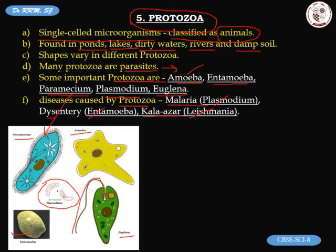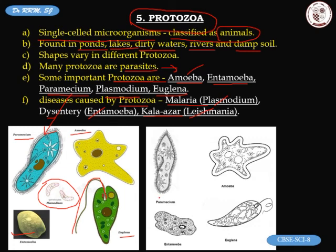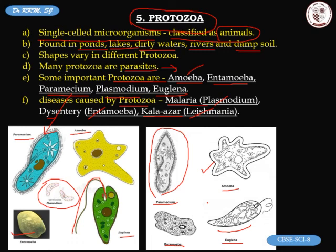For drawings: paramecium can be drawn with its shoe-like outline and cilia; amoeba with a simple irregular outline; and euglena with a simple structure showing the flagellum. These simple structures are sufficient for your copy.